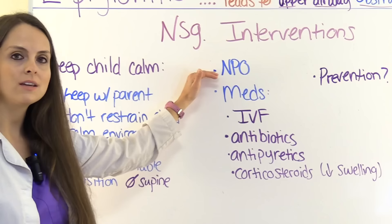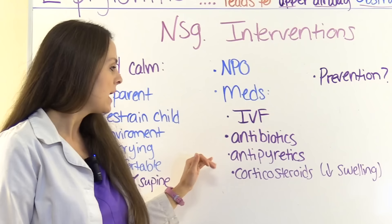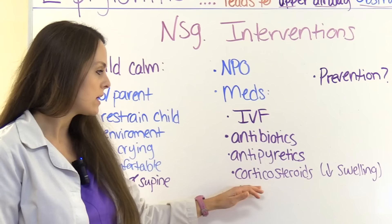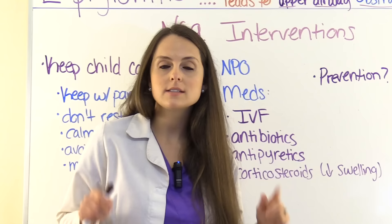Keep the patient nothing by mouth — no eating or drinking. Medications will include IV fluids, antibiotics to treat the bacterial infection causing the condition, antipyretics to decrease temperature, and corticosteroids to help decrease the swelling at the epiglottis. And remember, most cases of epiglottitis are prevented through the Hib vaccine, so be sure to educate the parent about that vaccination.